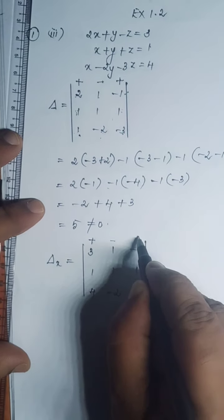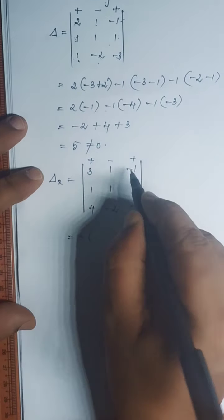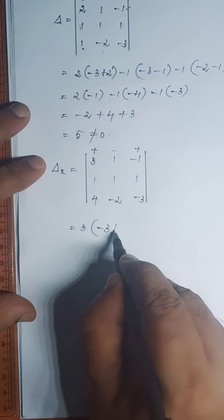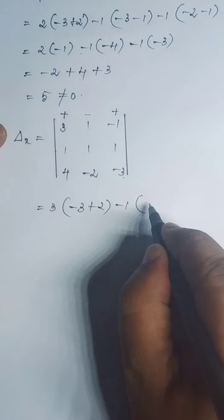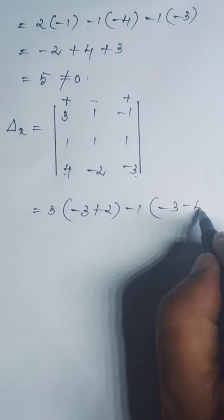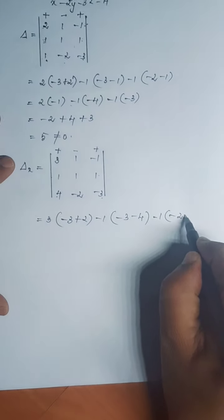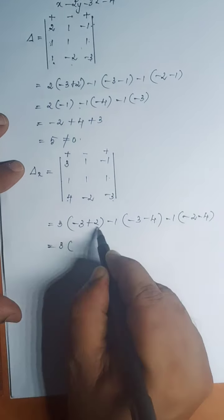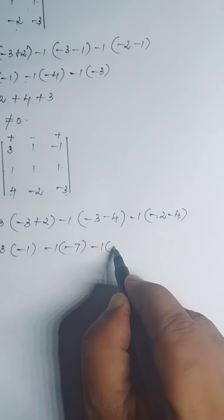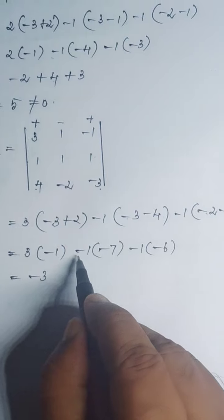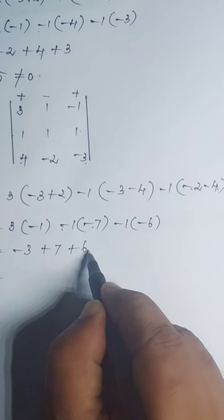At the top, write plus, minus, plus. Expanding the determinant: 3 into — leave this column and row — minus 3 and minus 2 become plus 2, giving minus 3 plus 2. Minus 1 into — leave this column and row — multiply these two: minus 3, 4 once or 4 becomes minus 4. Then minus 1 into — multiply these two — minus 2 and 4 once or 4 becomes minus 4. That is equal to 3 into minus 1, minus 1 into minus 7, and minus 1 into minus 6. That is equal to 3 into minus 1, minus 3; minus 1 into minus 7, plus 7; minus 1 into minus 6, plus 6. That is equal to 7 plus 6, which is 13. 13 minus 3 is 10.